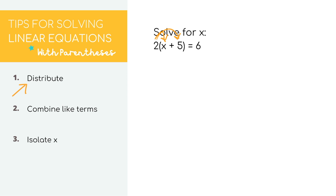For step number one, let's first multiply 2 by the first number inside the parentheses, which is x, and we have 2x. Then let's multiply the same 2 by the second number inside the parentheses, which is 5. 2 times 5 equals 10, so let's write that down. And that's it — that's distribution.